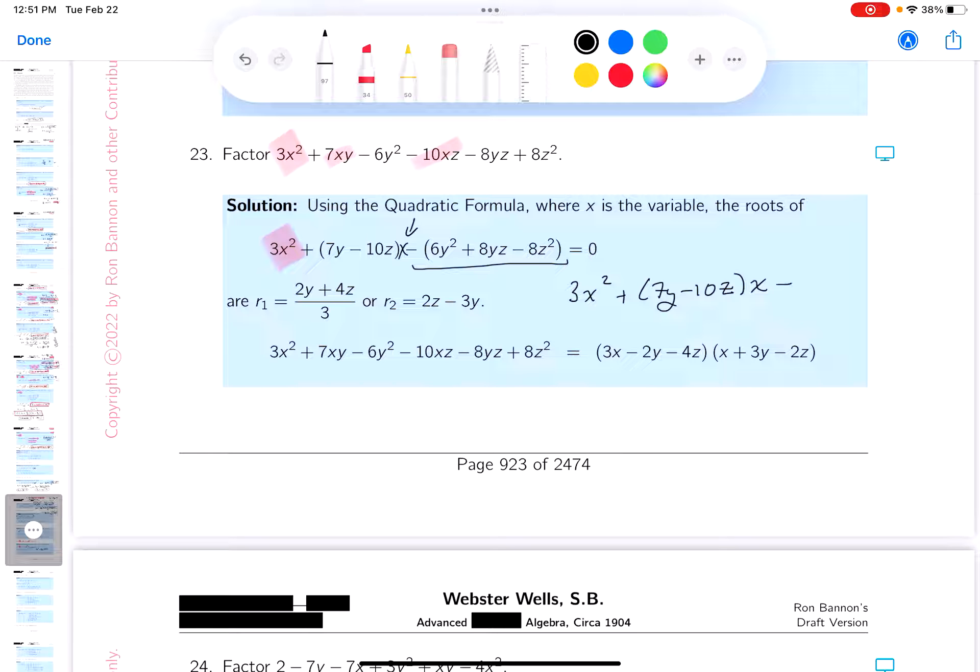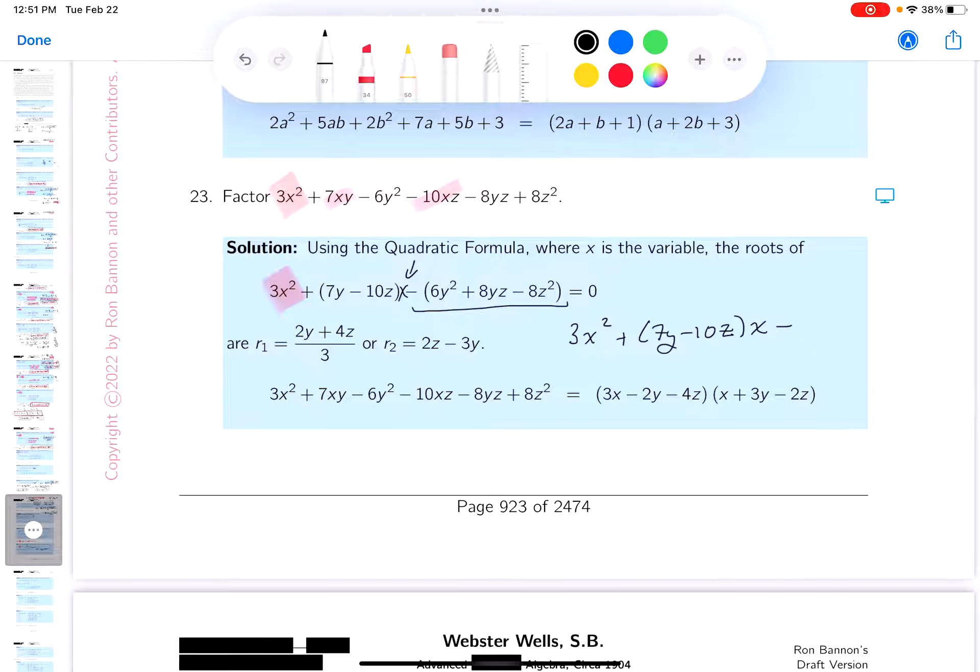Minus, I gotta factor this guy over here. And what I mean by that, I really have to factor, otherwise it's not going to happen. So 6y squared plus 8yz minus 8z squared. What am I going to pull out from that? Well, I'm going to pull out a 2 to make it easier for me. This would be 3y squared plus 4yz minus 4z squared.